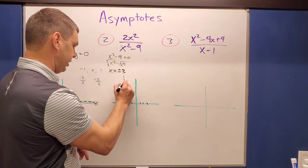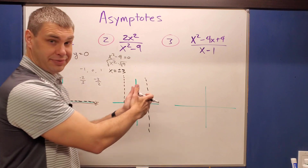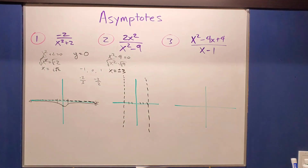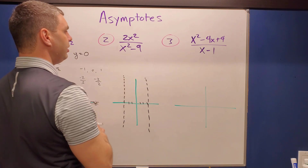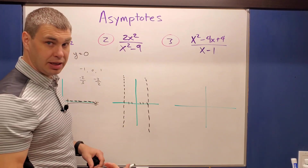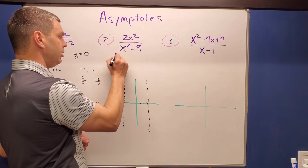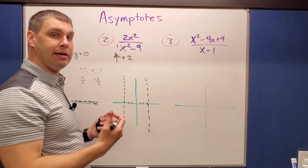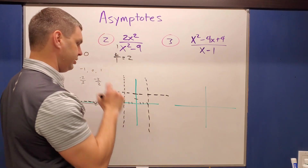With two vertical asymptotes, the graph is cut into three regions. It's also possible to have both vertical and horizontal asymptotes. For the horizontal: the degrees are the same — x squared on top and bottom. We take the ratio of leading coefficients: two over one equals two. So the horizontal asymptote is the line y equals two.